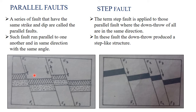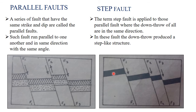Now we will see the step fault. Step fault is similar to parallel fault in that the faults are parallel to each other, but here the blocks of rock formation are displaced to one side just like a step, showing a step-like structure and appearance. The term step fault is applied to those parallel faults where the downthrow of all faults is in the same direction.